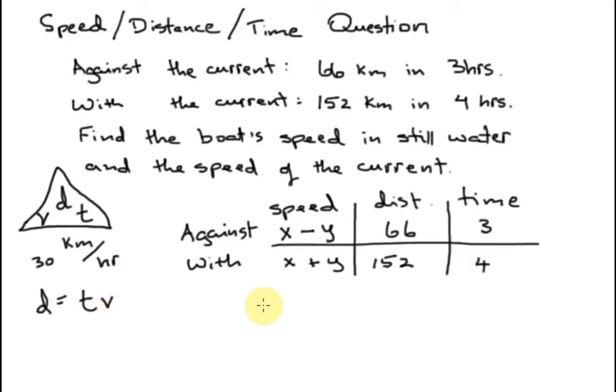So I do that over here. Let's do the against information first. Here's the distance and that equals time times speed. And there's an equation. Now I'm going to make this equation a lot simpler because the three divides perfectly into the 66. So that equation simplifies down to 22 equals x minus y, which is a lot nicer to work with.